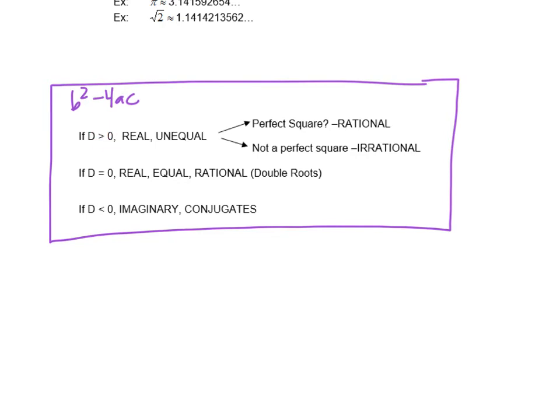that means that our roots are real and they are unequal, which means that we would have two different answers. Now, when they're unequal, if it's a perfect square, so if we do b squared minus 4ac and we get 25, or we get 49, or 81, that's a rational number. Or that would be a rational root.